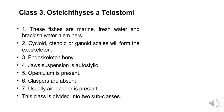Class 3 is Osteichthyes, also called Teleostomi or bony fishes. These fishes are marine, freshwater and brackish water. There are three types of scales present in the body: cycloid, ctenoid, or ganoid. The bony endoskeleton has autostylic jaw suspension. An operculum is present and claspers are absent. Air bladder is usually present. This class is further divided into two subclasses.